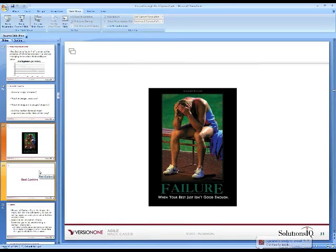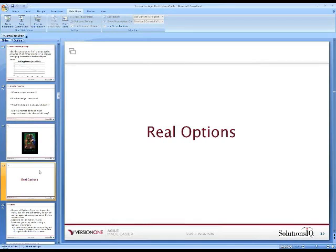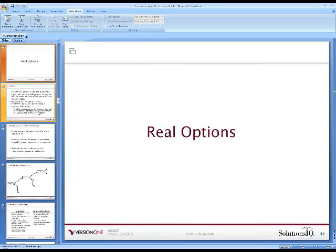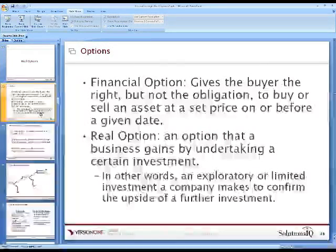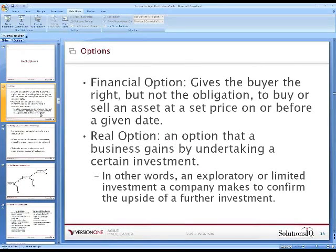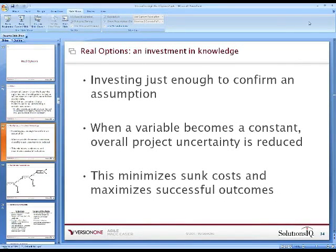That leads us to what to do in this situation — something called real options. Options overall: we've all heard of financial options, puts and calls. Real options are different. By definition, it's an option a business gains by taking on a certain investment — an exploratory or limited investment a company makes to confirm the upside of a further investment. It's really an investment in knowledge, where a company invests just enough. When a variable becomes a constant, the overall project risk is certainly reduced. This minimizes sunk cost and maximizes successful outcomes.